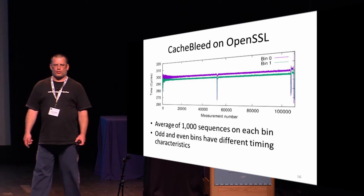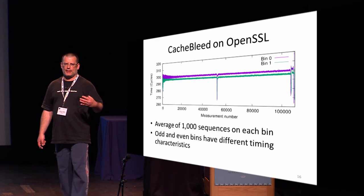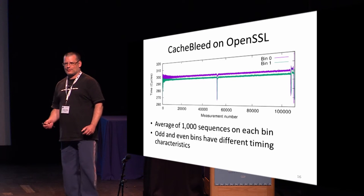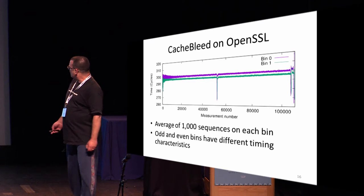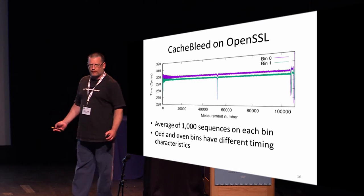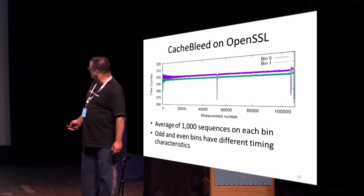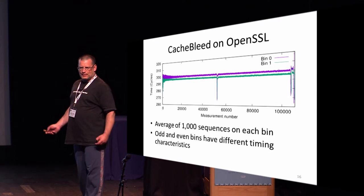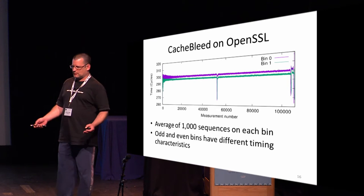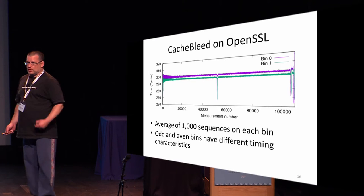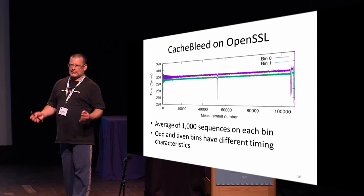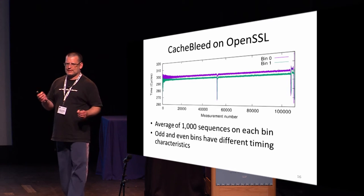We tried this on OpenSSL. We captured a thousand traces of Cache Bleed running in parallel with OpenSSL decryption. If we monitor bin zero or any of the even bins, we get the higher line; if we monitor bin one or any of the odd bins, we get a bit lower. We can clearly see that OpenSSL does something, drops, does something again, and repeats. This is expected because OpenSSL uses the Chinese Remainder Theorem for RSA, so it does two exponentiations. The difference between the lines is due to the modular reduction algorithm, which uses 128-bit numbers and has different access patterns to odd and even bins.